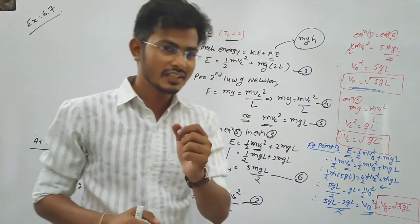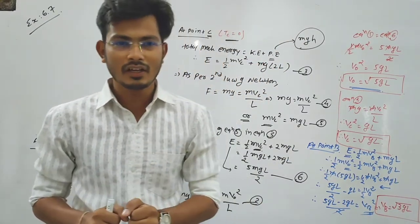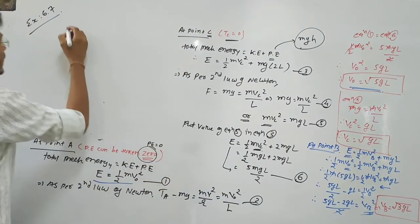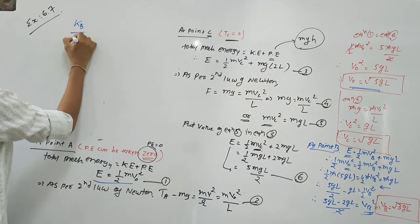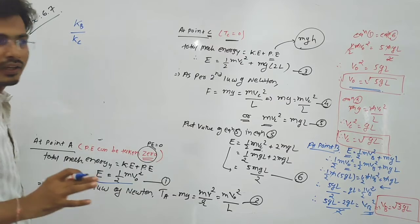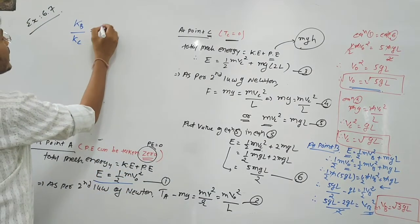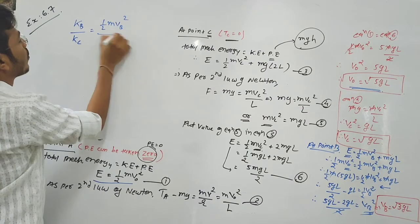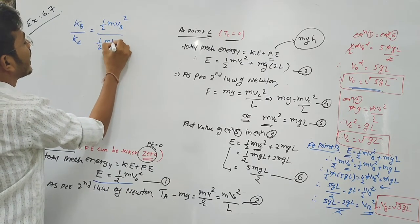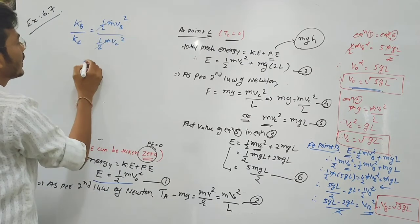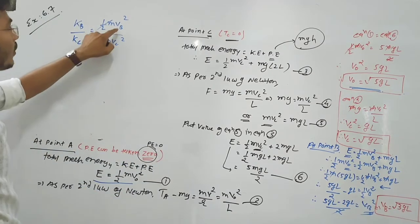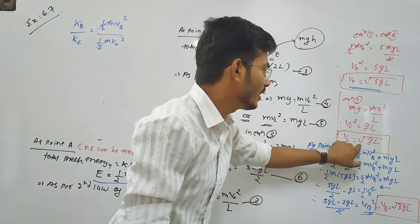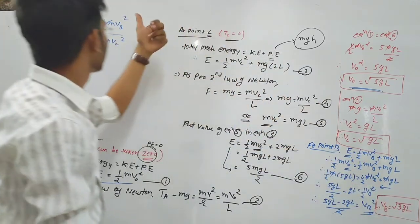For part three, we find the ratio of kinetic energies KB divided by KC. KB divided by KC equals (half m Vb²) divided by (half m Vc²). The half and m cancel out, leaving Vb² divided by Vc². Substituting Vb² equals 3gL and Vc² equals gL, we get KB divided by KC equals 3gL divided by gL, which equals 3. Therefore KB to KC equals 3 to 1.